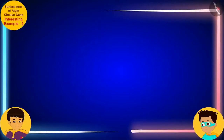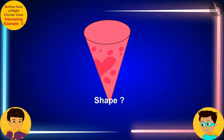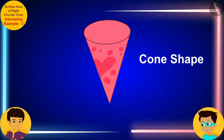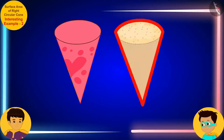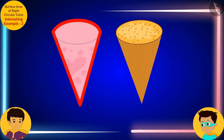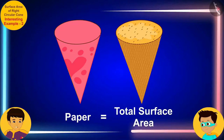Thomas, can you tell me what shape this ice cream is? I guess this ice cream looks like a cone. That's right. And look, Thomas, this ice cream is completely covered with this colored paper. This means that the paper used to cover the ice cream will be equal to its total surface area.